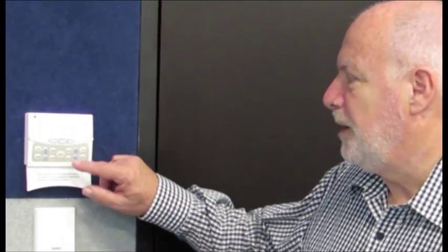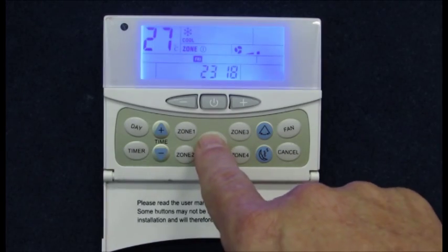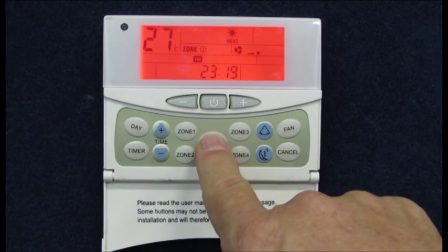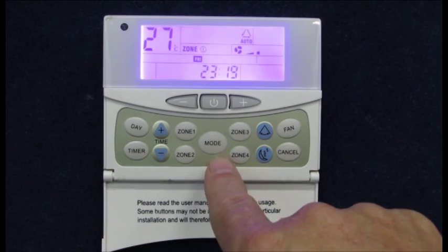The display has backlight colors to help you recognize the operating mode: blue for cooling, yellow for fan only, reddish orange for heating, and light violet for auto.